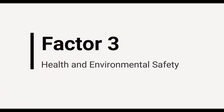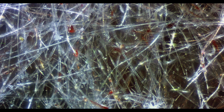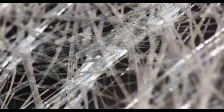The third factor to consider is safety. We'll quickly look at the pros and cons of these materials, covering the safety aspect. Fiberglass is composed of glass materials broken down into the tiniest fibers. It comes in various thicknesses and densities. It is economical and easily obtained at retail stores like Home Depot, Lowe's, and Menards.